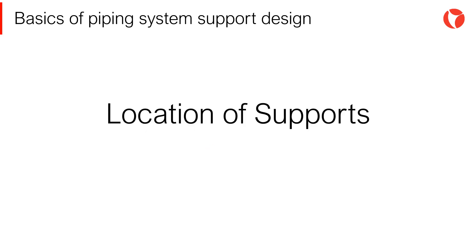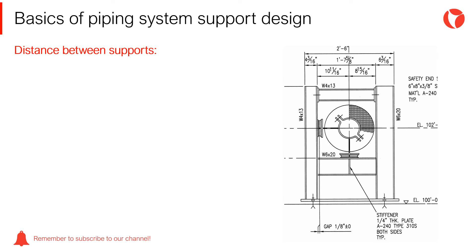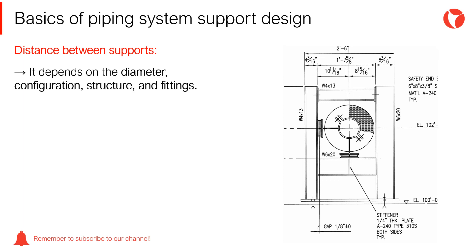The allowable spans between supports of horizontal lines are mainly limited by the longitudinal forces that must be kept within limits, or in some cases by the maximum deflection. In other special cases, the span can be limited to control the natural frequency of the pipe so as to avoid undesirable vibrations. Basically, the distance between supports depends on the diameter, configuration, structure, and fittings.